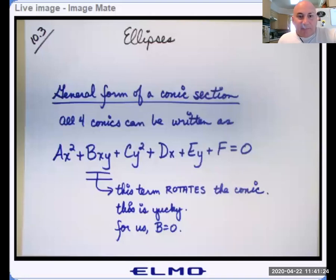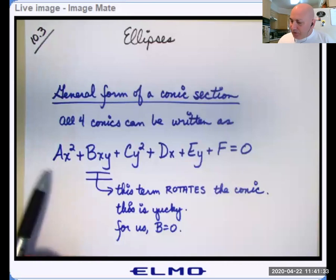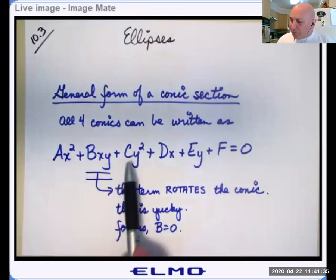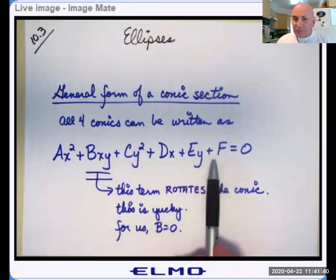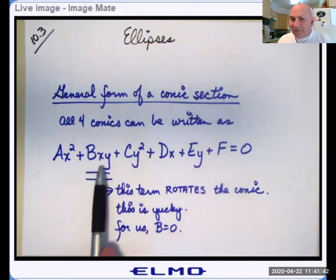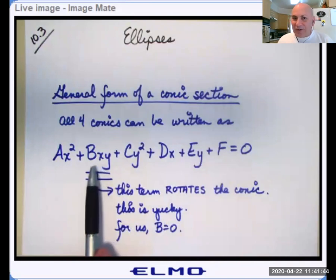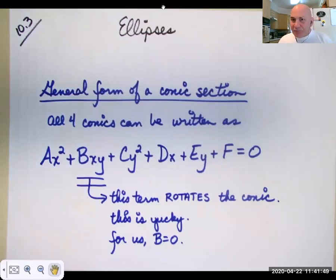All conics can be written — all four of them, that's circles, ellipses, parabolas, and hyperbolas — can be written with an x squared term, a y squared term, an x term, a y term, and a constant. You can also have this x-y term, but nobody likes the x-y term.